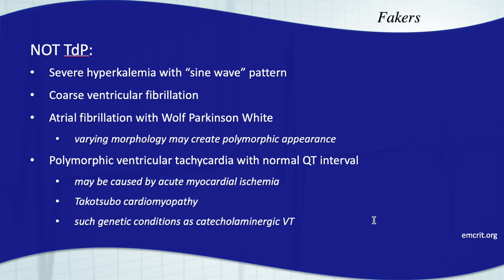Polymorphic VTAC with a normal QT interval — this is usually caused by someone starting to experience an MI — myocardial ischemia. They'll go into this polymorphic VTAC. It could also be caused by congenital issues, Takotsubo cardiomyopathy — go ahead and Google that for more information. Takotsubo stands for octopus trap — that's the shape — and the reason it has that name is because it was originally identified in Japan. It takes this octopus trap shape — it's a cardiomyopathy. You could also have catecholaminergic ventricular tachycardia as well.